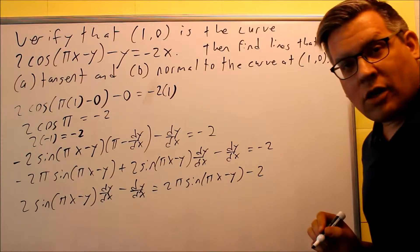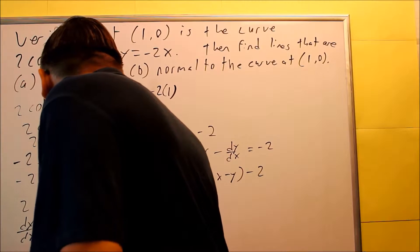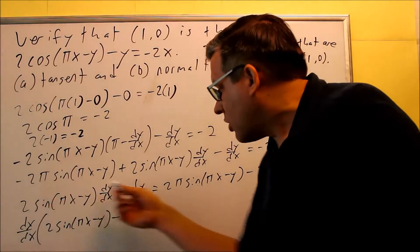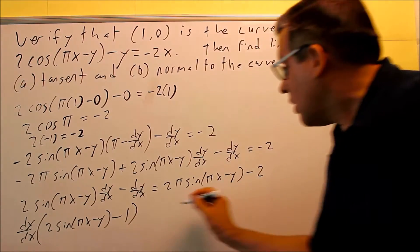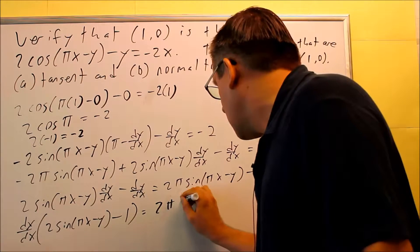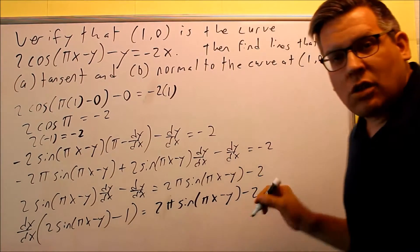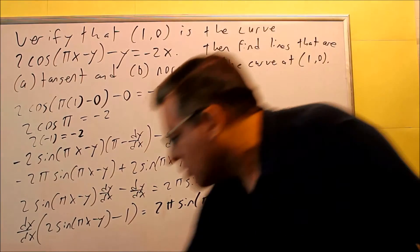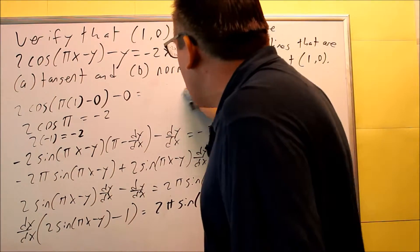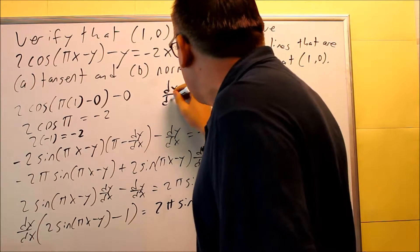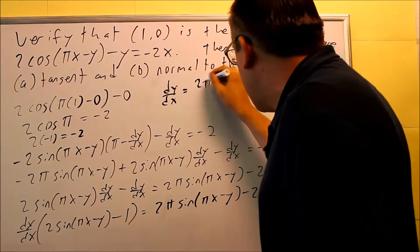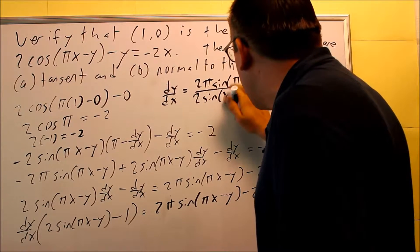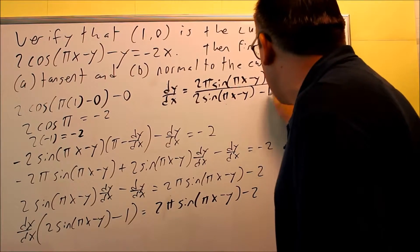You want to do a factoring step - factor out dy/dx. So factor out dy/dx and you get 2 sine of (pi x minus y) minus 1. Don't forget that minus 1 is important; if you left that out you wouldn't get the correct result when you multiply back through. You need that 1 there in order to get that single dy/dx term. Then divide both sides by the parenthetical expression to solve for dy/dx: dy/dx equals [2 pi sine of (pi x minus y) minus 2] divided by [2 sine of (pi x minus y) minus 1].